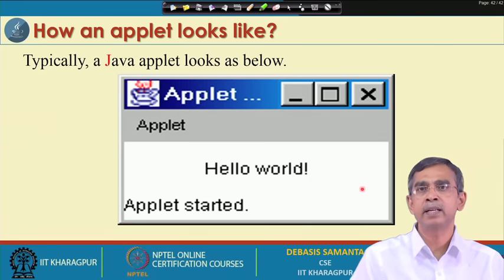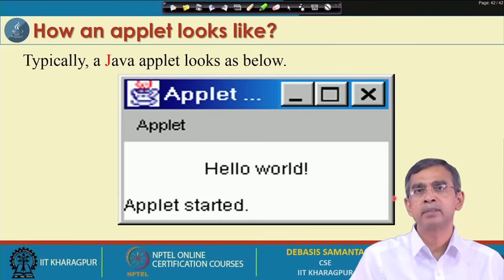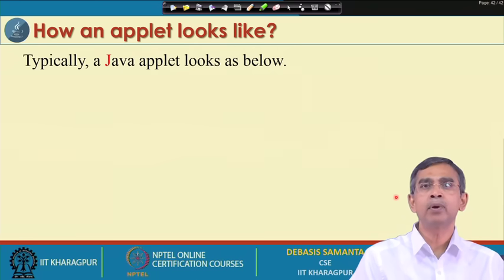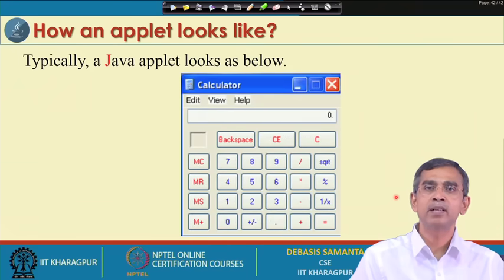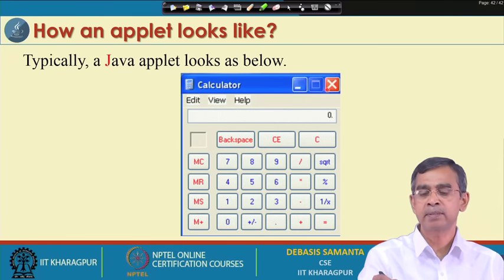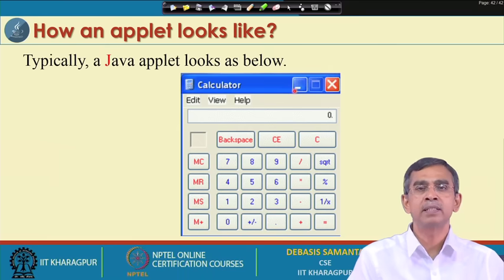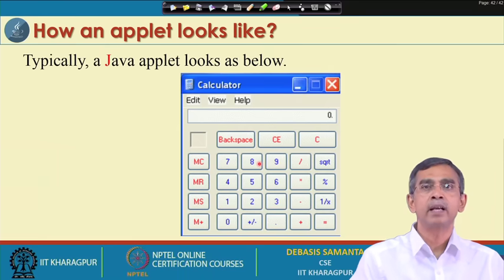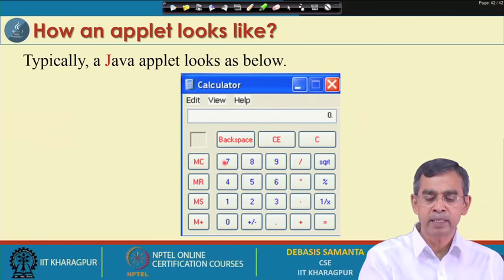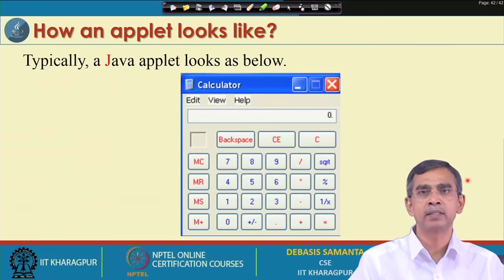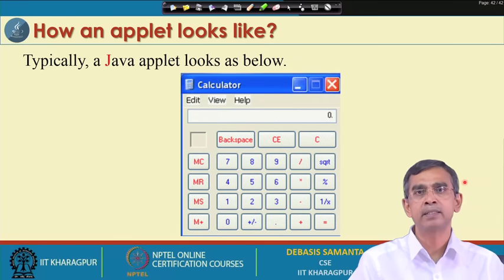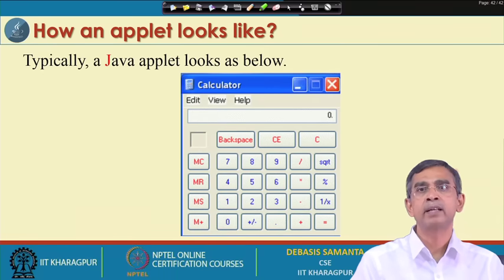This is a simple version of an Applet. Within the display area you can include images, multimedia documents, text links, and more. There is also another example of an Applet that looks like a calculator. It has a close button, minimize button, and maximize button. The Applet contains components such as buttons, labels, and a text field area where it will display something.